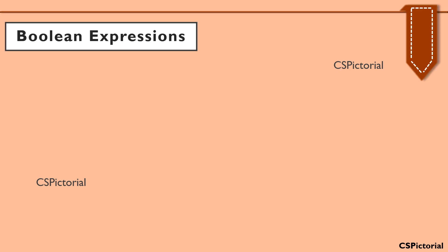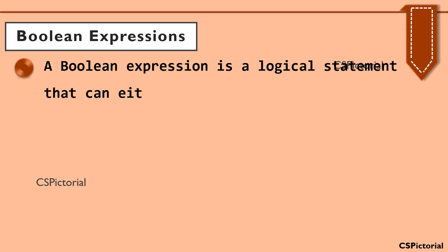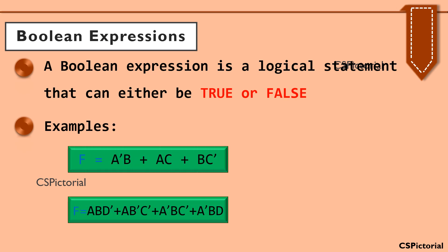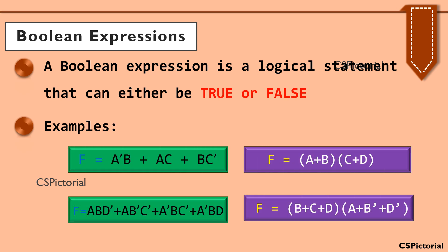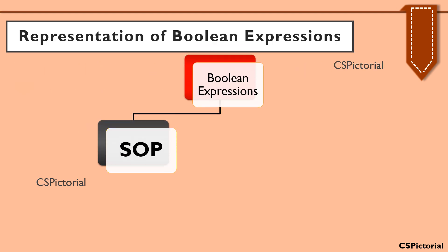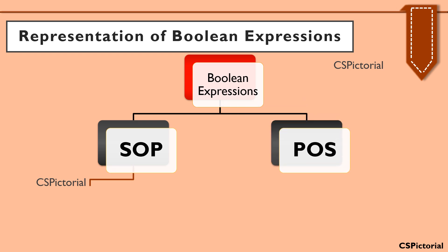First, let us know what a Boolean expression is. A Boolean expression is a logical statement that can either be true or false. Some simple Boolean expressions are given here. We will now understand the difference between various forms of Boolean expressions. Basically, every Boolean expression can be represented in two forms: SOP form or POS form.